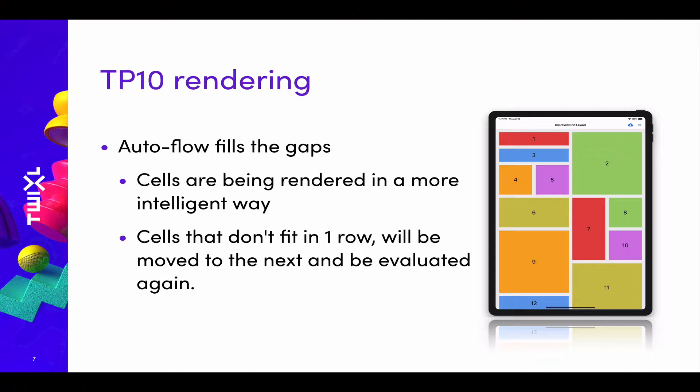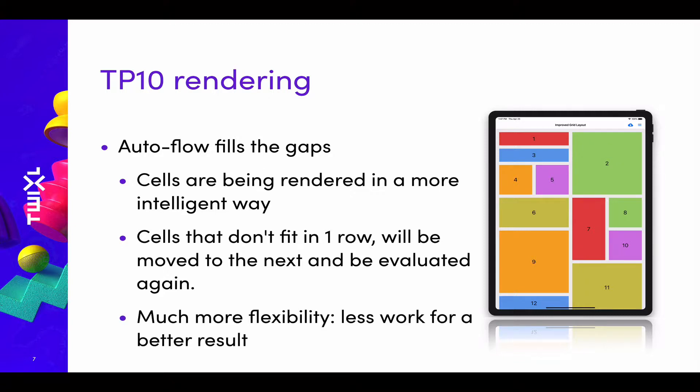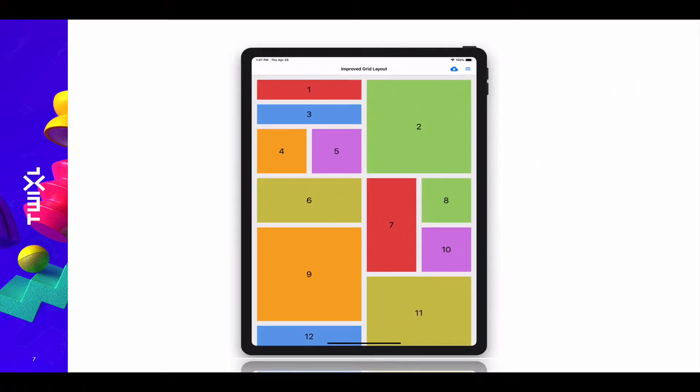You'll be more flexible about the types of cells you put on the grid, with much more flexibility, less work, and a better result. This will be a very powerful way of providing beautiful browse pages to introduce your content to your readers. As you can see here, cells 1 and 2 are displayed in the same way as in the Twixl Publisher 9 app, but the third cell is moved just beneath cell number one, so there are no gaps.